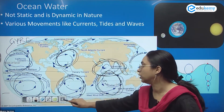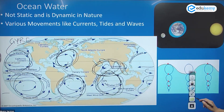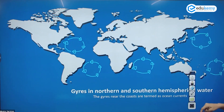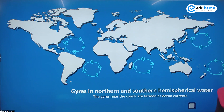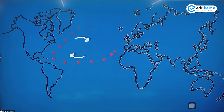So you have ocean water that is moving. How is the ocean water moving? These are the gyres — you can see the gyre: North Atlantic, South Atlantic, North Pacific, South Pacific, and the South Indian Ocean gyre. You can look at how the water moves — the gyre is moving like this.